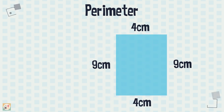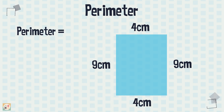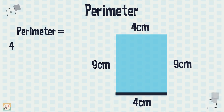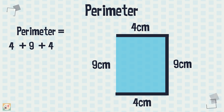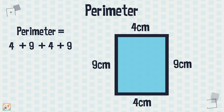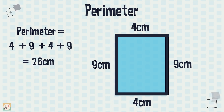Let's look at an example. We are given the length of the sides of this rectangle. Adding them all together gives us the perimeter. Don't forget to include the units — in this case centimeters — in the answer.